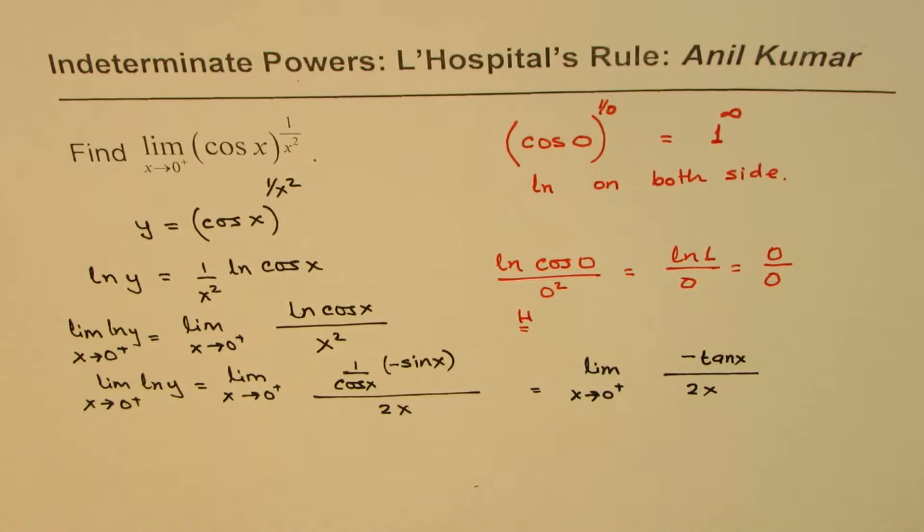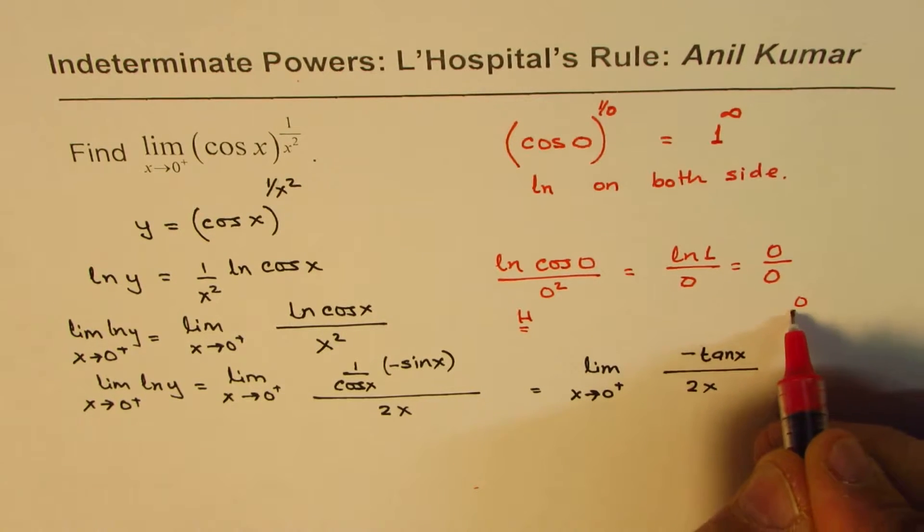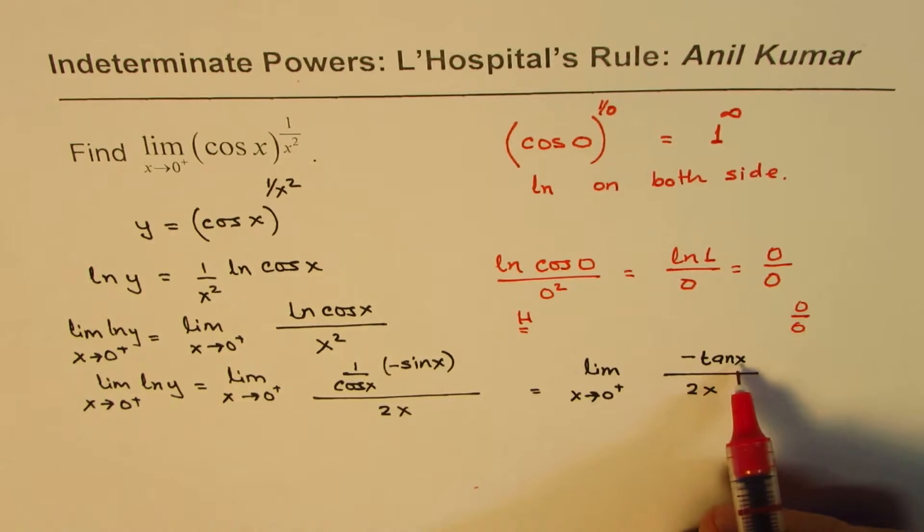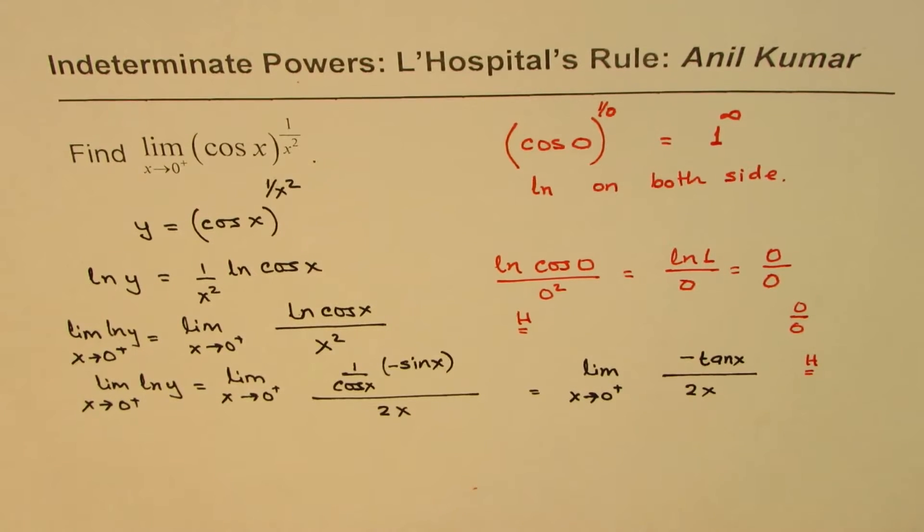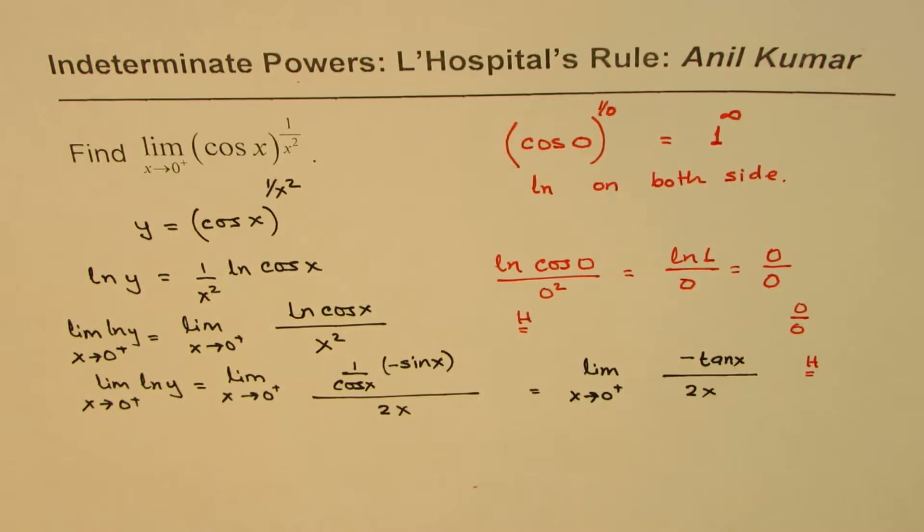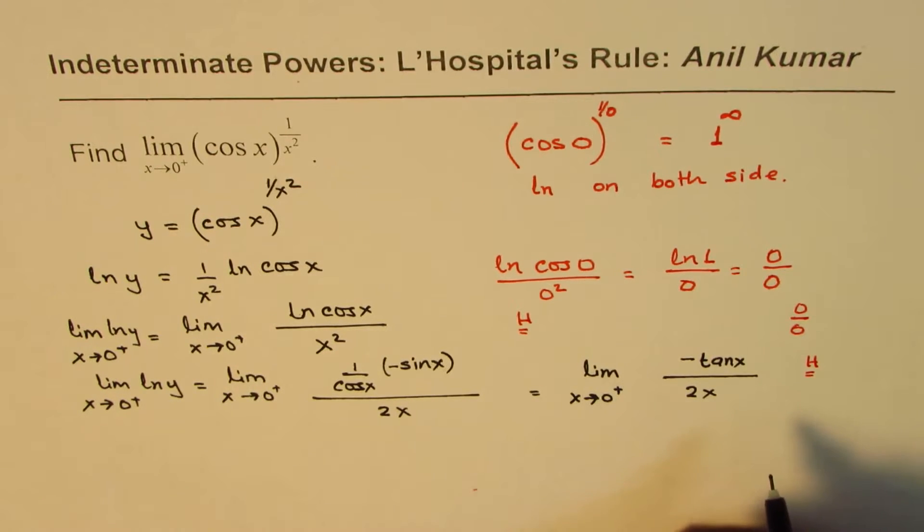Now at this stage, if I substitute 0, then again, what do I get? I get 0 over 0. So tan 0 is 0, and 2 times 0 is 0. So again, we can apply L'Hospital's rule. So that is to say that we can have derivative of both numerator and denominator.